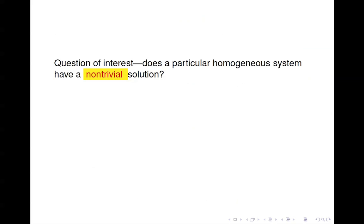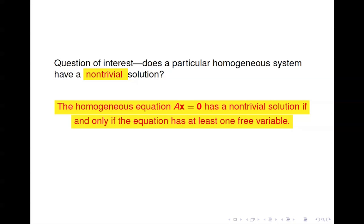We know the system is consistent. If you think back to the two questions we ask when solving a system: the first is, is it consistent? We know this one is. So we move on to question two: is the solution unique, or are there an infinite number of solutions? If the solution is unique, that means you only have the trivial solution. Do there exist any non-trivial solutions? The answer: you'll have non-trivial solutions if and only if your system has at least one free variable.